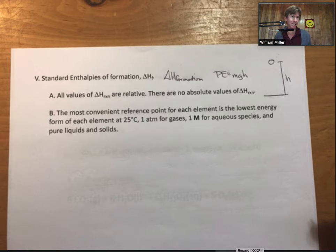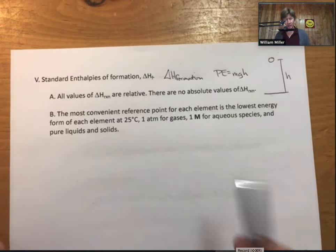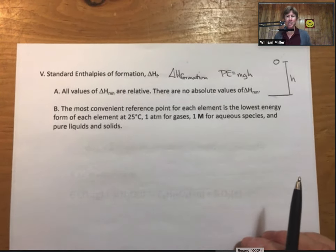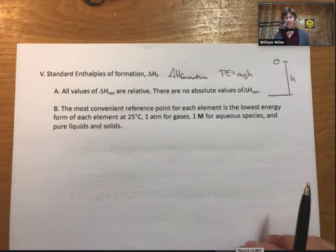Chemists and scientists in general have found that that's the easiest way to do it. And the most convenient reference point for each element is the lowest energy form of each element at 25 degrees Celsius. One atmosphere for gases, one molarity for aqueous species, and reference state of pure liquids and solids.